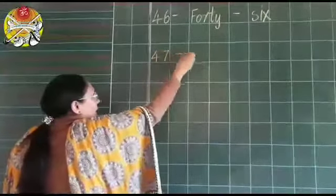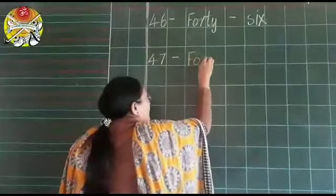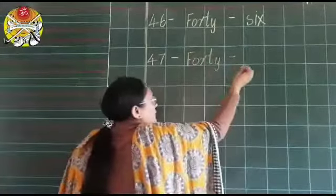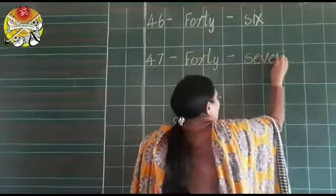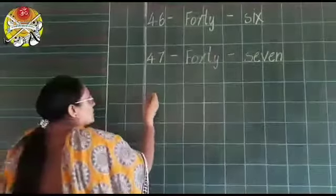47 dash F-O-R-T-Y, 40 dash S-E-V-E-N, 7. 47. Leave one box and write.